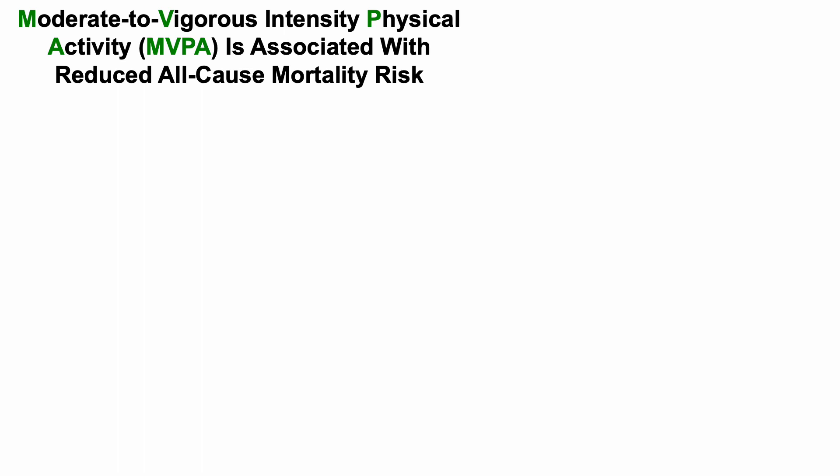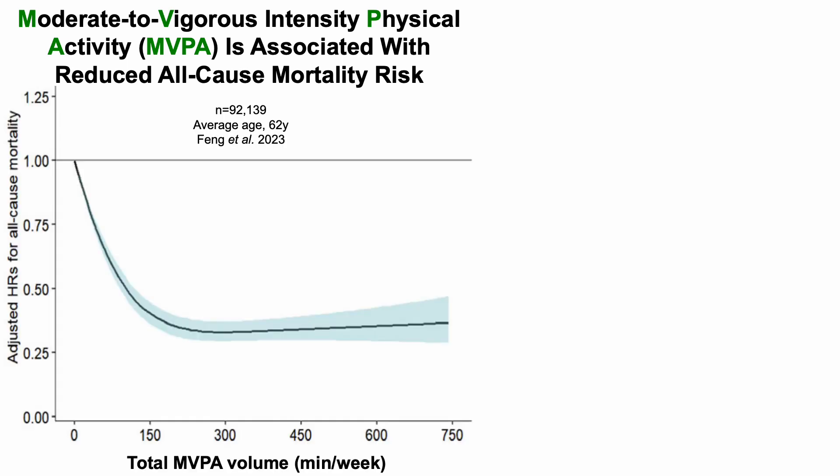Moderate to vigorous intensity physical activity, or MVPA, is associated with reduced all-cause mortality risk. On the y-axis, we have the adjusted hazard ratios for all-cause mortality risk, and on the x-axis, we have total moderate to vigorous physical activity volume in minutes per week.